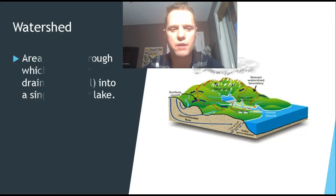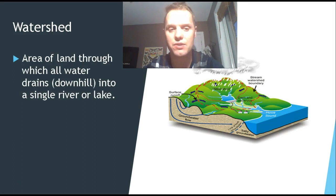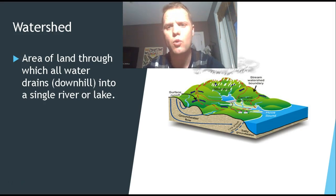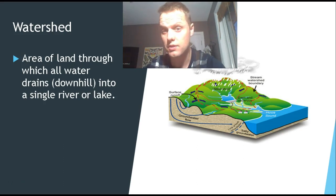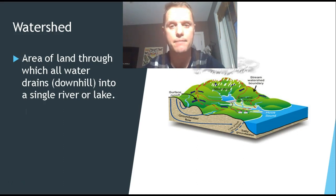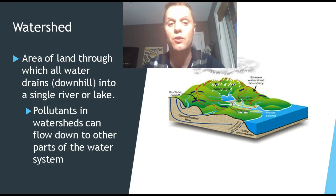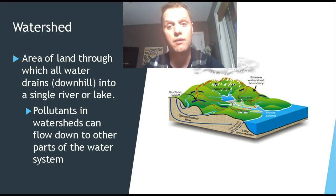We use the term watershed when talking about an area of land where all the water drains downhill into a single river or lake. Leamington, for example, is a watershed. Fertilizers or pesticides that we put on our fields or lawns can dissolve into the water and eventually travel through our sewer or drainage systems into the lake. Pollutants can flow into our water system this way, so even if we don't live directly on the lake, because we're in a watershed, all our water will eventually end up there.